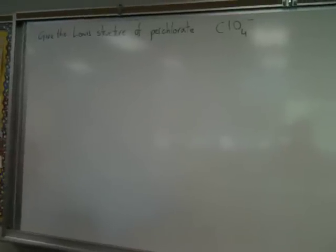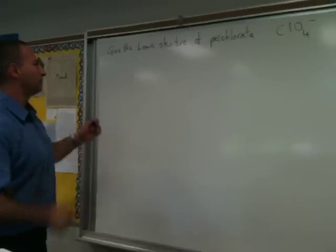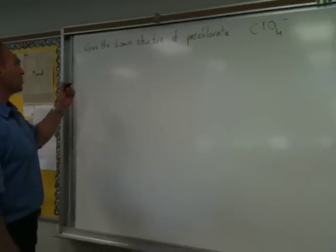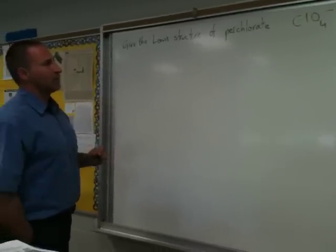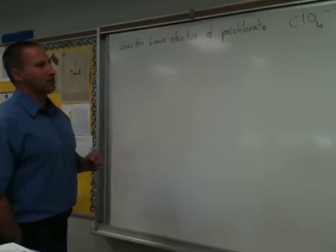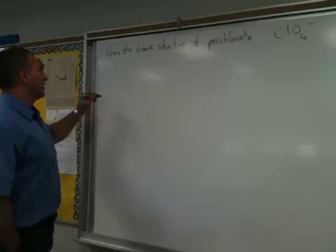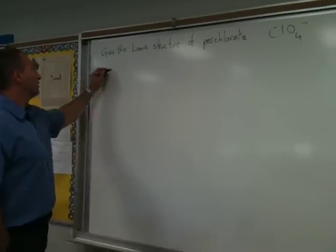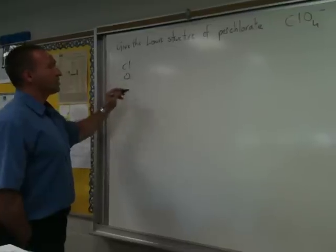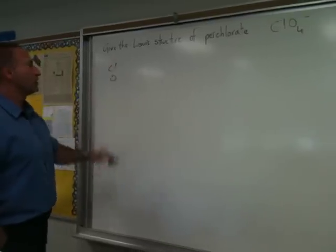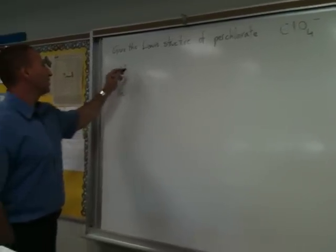We're doing the Lewis structure of perchlorate. We begin by counting how many valence electrons there are in the anion. We have chlorine, we have oxygen, and there's a negative charge of one, so we're going to throw in one extra electron.